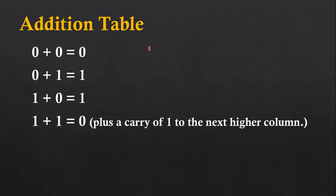If you want to perform binary addition operation, you have to follow this addition table. If two corresponding bits are 0 and 0, then their addition result will be zero. If the first digit is zero and the second digit is one, then the result will be one. If the first digit is one and the second is zero, then the result will be one. If both corresponding bits are one, then the result will be zero, plus a carry of one to the next higher column.